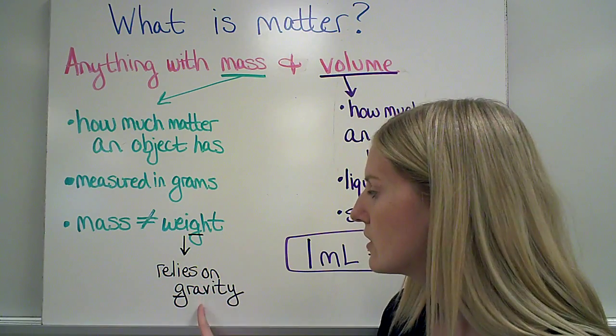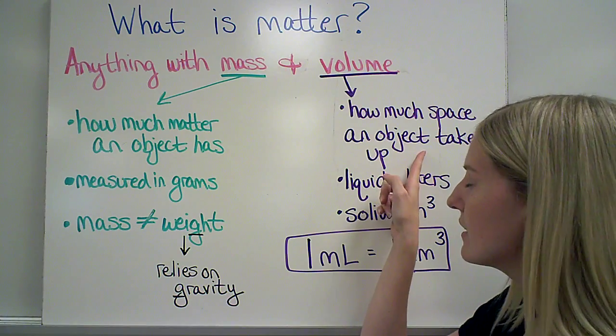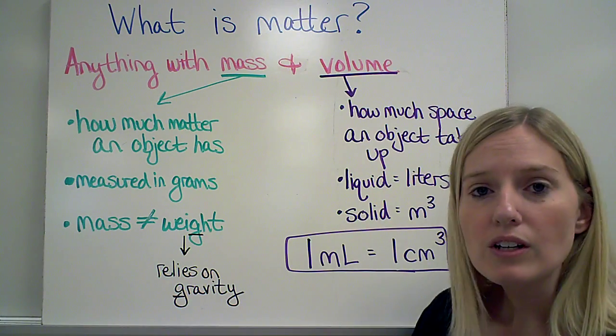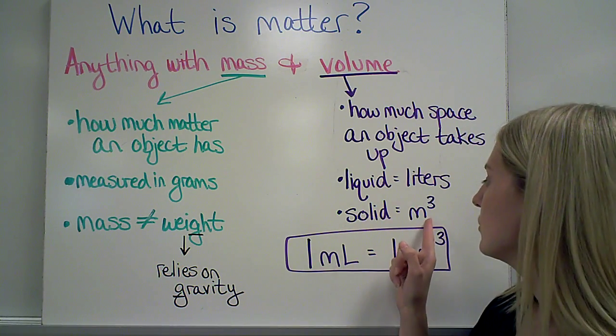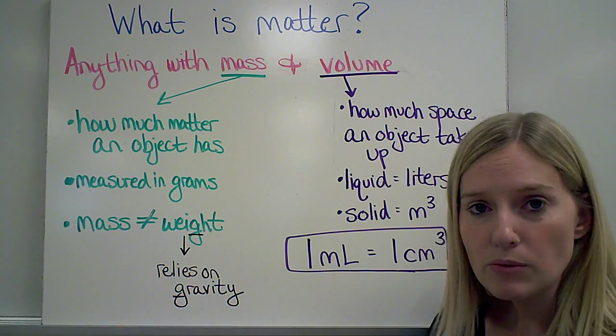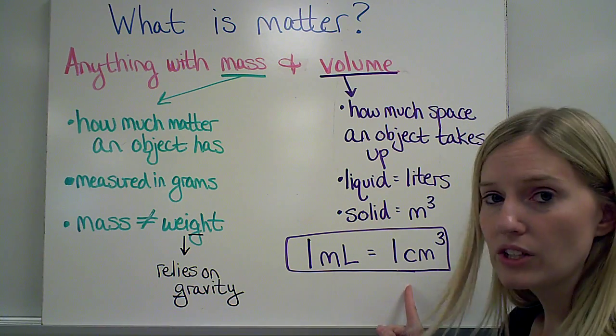So weight relies on gravity, but mass does not. Volume is how much space an object takes up. For liquids, we measure this in liters. For solids, we measure this in cubic meters, or as we've discussed before, one milliliter is equal to one cubic centimeter.